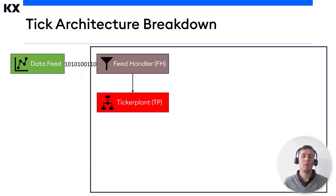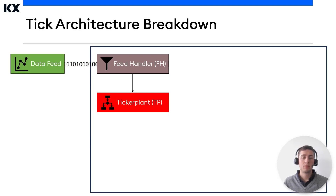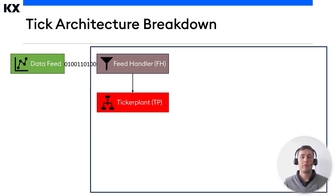The ticker plant is a specialized KDB Plus process that operates as a link between the client's data feed and a number of subscribers. It receives data from the feed handler, appends a timestamp to it, saves it as a log file, and then publishes this data out to any processes that are subscribed to it. When we start a ticker plant process, we provide it with a table schema for the tables we want to capture. Subscriber processes may then subscribe to all or a subset of these tables. Once it publishes this data, it then purges any records from the tables. In this way, the ticker plant uses very little memory, whilst the full record of the intraday data is still maintained by the subscribing real-time database.